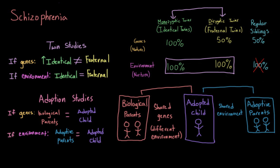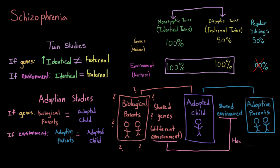There are problems with adoption studies as well. Because a child has been adopted, we might have incomplete information about their biological families. Also, placement for adoption is not random — children are not randomly handed to any member of the population. Some agencies even try to match individuals with an adopted family similar to their biological family in terms of community and culture, making it more difficult to determine whether something is genetically or environmentally driven.